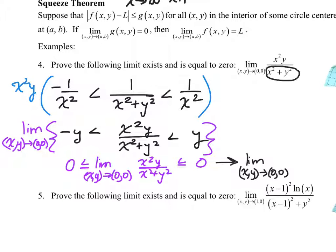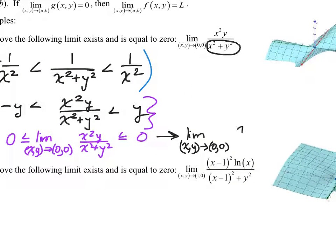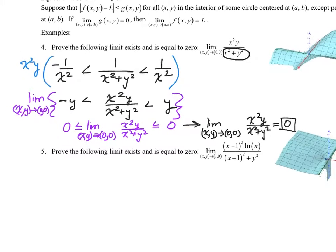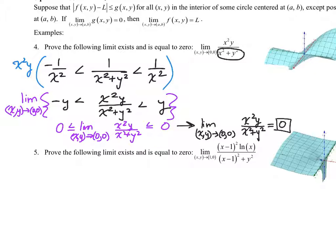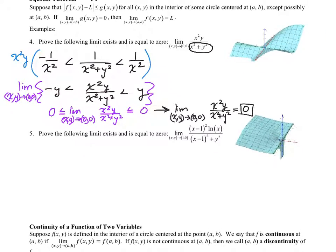There will definitely be a squeeze theorem problem on the next unit test. The good news is there are only so many that work, so what you see is what you get. What's going to be on the test related to the squeeze theorem is going to look an awful lot like one of these. Maybe it won't be x squared y over x squared plus y squared — maybe it's x cubed y over x cubed plus y cubed — but it's going to be structured almost identically.